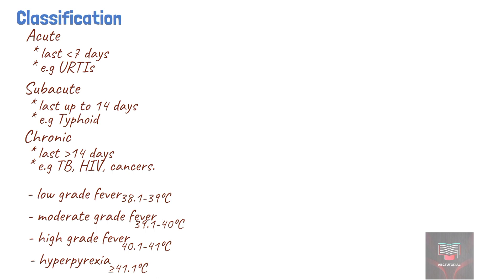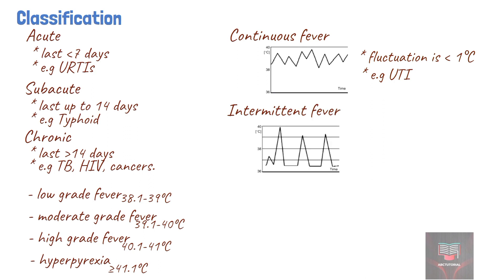There are certain patterns of fever that can be seen in a certain group of illnesses. For example, in continuous fever, the temperature remains above normal throughout the day and does not fluctuate more than one degree Celsius in a 24-hour period. An example is fever seen in urinary tract infection. In intermittent fever, the temperature elevation is present only for a certain period in the day and later cycles back to normal. An example is malaria fever.